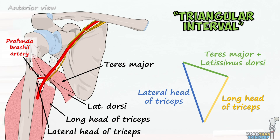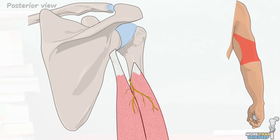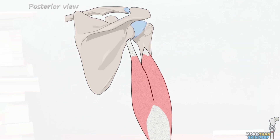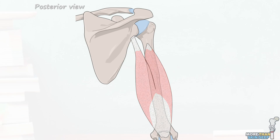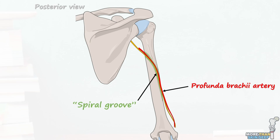The radial nerve and profunda brachii will travel with each other for much of their route down the arm. From now on it's easier to view the radial nerve and its branches from a posterior view. As it passes through this area the radial nerve produces a sensory branch known as the posterior cutaneous nerve of the arm, which takes information from the skin overlying the back of the lower arm. The radial nerve continues along with the profunda brachii artery down the back of the arm, passing obliquely from medial to lateral in a depression known as the spiral groove of the humerus.